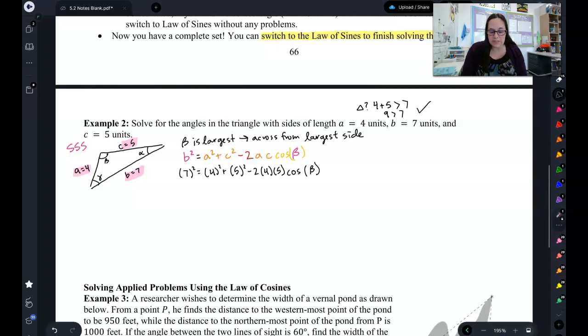Now, the first thing I would like you to notice is that my variable that I'm solving for is in a very different place than it was in the last video. In the last video, the thing we were solving for was right here. So, all we had to do was square root, and we were done. However, this time, what I'm solving for is at the end. That means this is going to be a lot more complicated to solve for. Here's how I would always simplify this. In pieces. And specifically, these three pieces. So, 7 squared is 49. 4 squared plus 5 squared is 41. Negative 2 times 4 times 5 is a negative 40. And then we have cosine of beta.